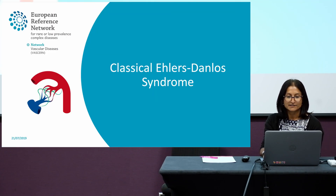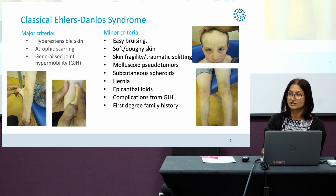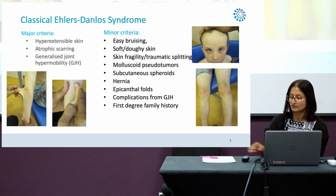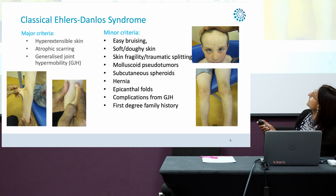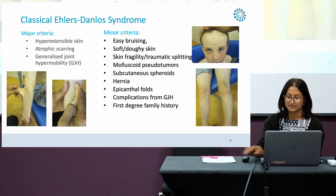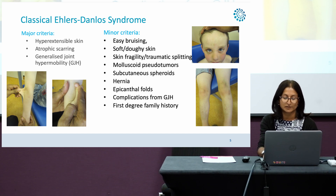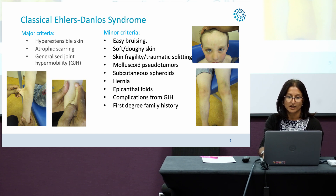To talk about classical Ehlers-Danlos Syndrome — these pictures show a patient with very typical features of classical EDS. You can see the hyperextensible skin, the joint hypermobility, some scarring, epicanthic folds, and quite significant bruising for this little boy who's only six years old. We have major and minor criteria that have been written up in the nosology paper.